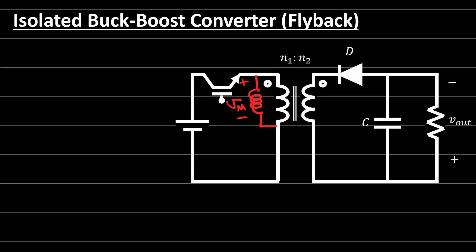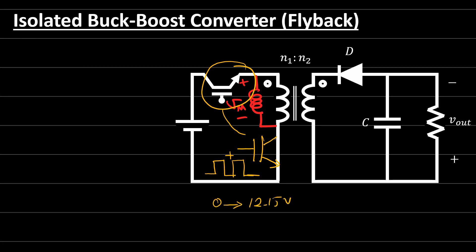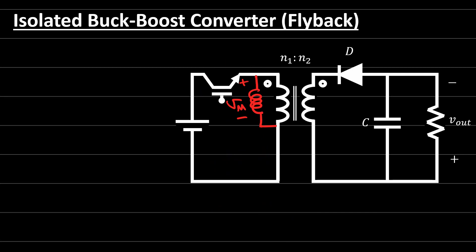Let's look at the flyback converter after installation of the transformer. We usually place the transistor on this side to make it easier to design the gate driver. We can design a gate driver that gives a voltage from 0 to 12 or 15 volts, without taking into consideration the voltage potential at that point, which would result in a more complicated gate driver design. Here we replace the inductor of this converter with a transformer.